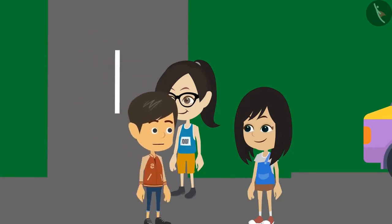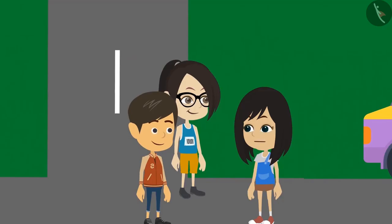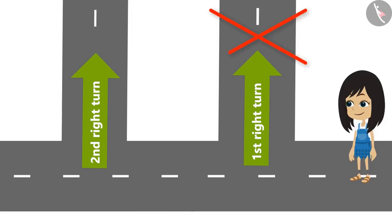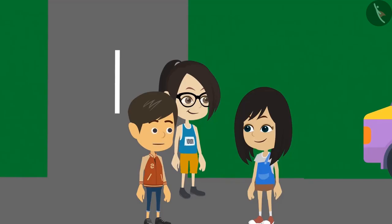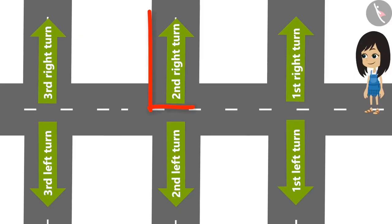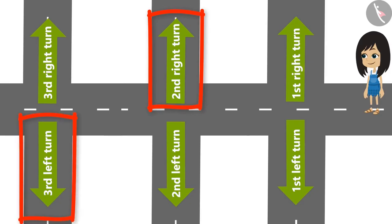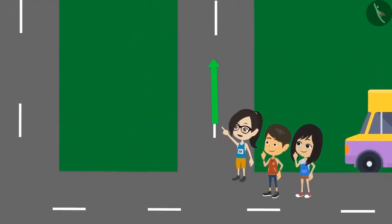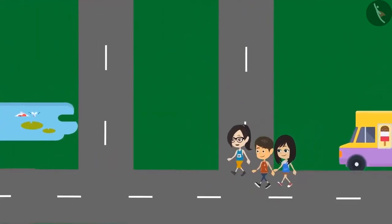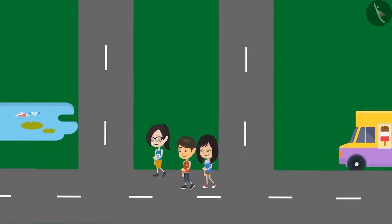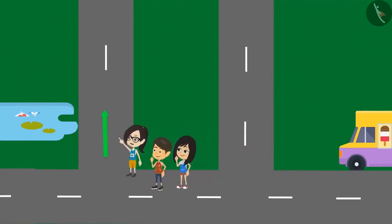Okay, please tell me. If we say second turn, it means we have to leave the first turn and take the second. Similarly, if we say second right turn, it means we leave the first right turn and take the second right turn. Then you should say 'leave first right and take second right.' Yes, we can say that, but it is too long — so we simply say take second right turn, third left turn, etc. Look, this is the first right turn. We will not turn here; we will go straight and turn on the next right.